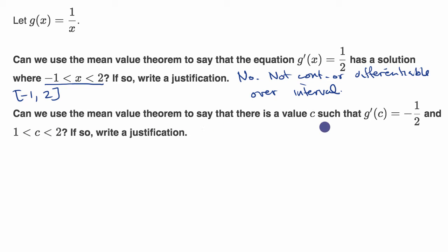Can we use the mean value theorem to say that there is a value c such that g prime of c equals negative one half and one is less than c is less than two? If so, write a justification. Pause the video again.